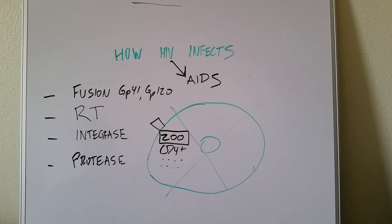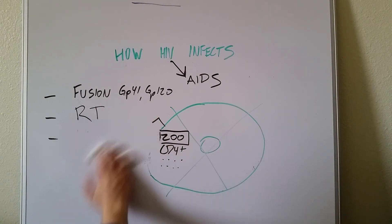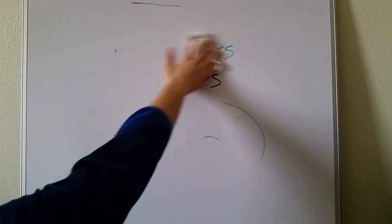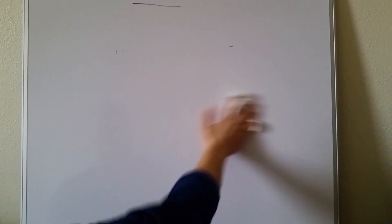So that's how HIV infects cells, that's how you get AIDS, and those are the steps that were written over there in black that you really want to try and target right now if you are a drug researcher. Thank you.